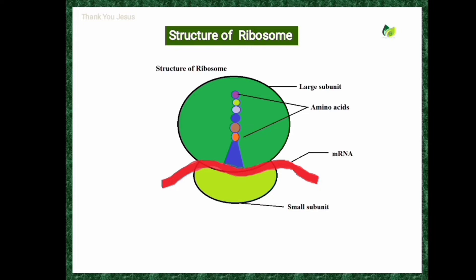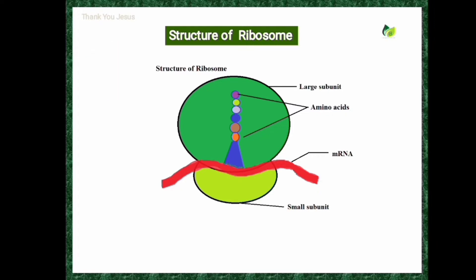Ribosomes are described as protein factories because they are involved in the synthesis of protein. They are found in the cytoplasm, or they may be attached to the endoplasmic reticulum — that endoplasmic reticulum is then referred to as rough endoplasmic reticulum. Ribosomes are spherical bodies and they are not bounded by a unit membrane.